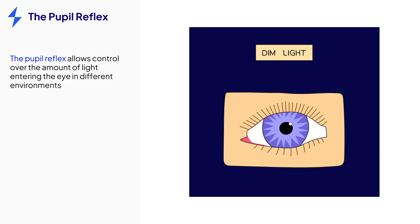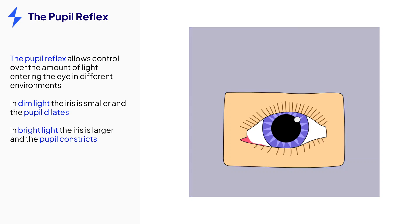The pupil reflex is a useful mechanism to control the amount of light entering the eye in different conditions. In dark or dim conditions, it is useful to increase the size of the pupil to let more light into the eye.